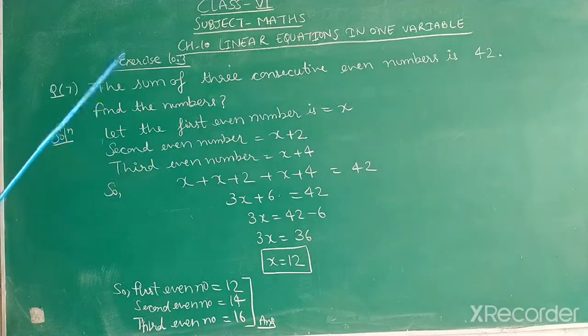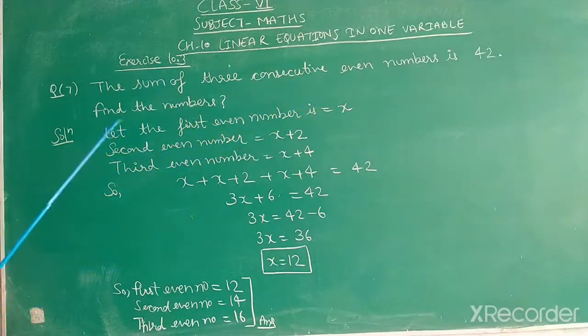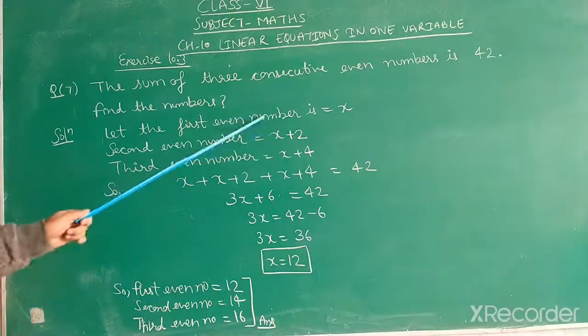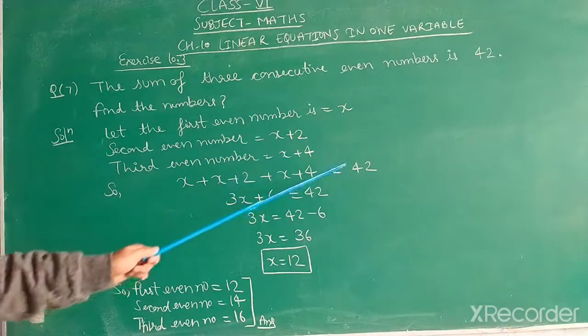So, according to the question, the sum of 3 consecutive even numbers is 42. We can write the sum of all these numbers equal to 42. So, we can write x plus x plus 2 plus x plus 4 is equal to 42.